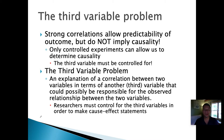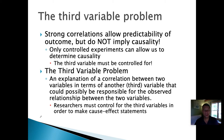Only a controlled experiment can allow us to determine what causes a certain effect. The difficulty with correlations is that there may be a third variable involved that has to be controlled for. The third variable problem is an explanation of a correlation between two variables in terms of another variable that could possibly be responsible for the observed relationship between the two.